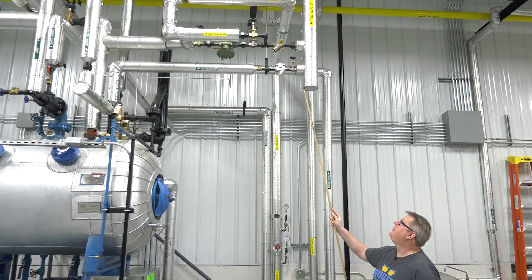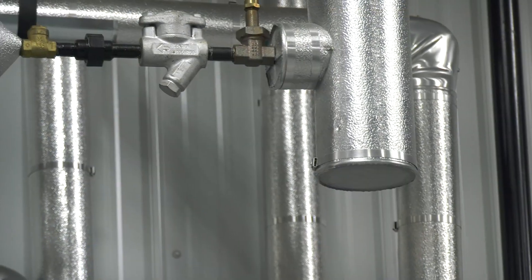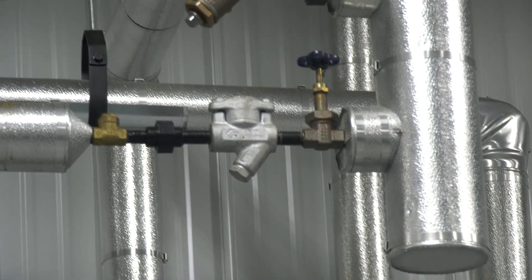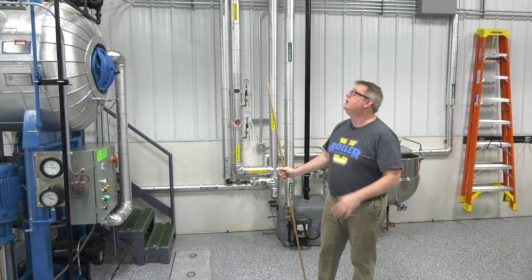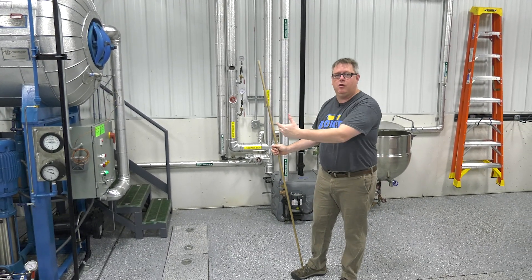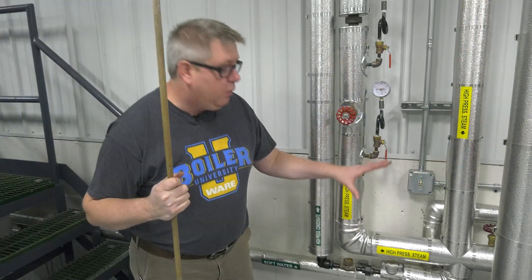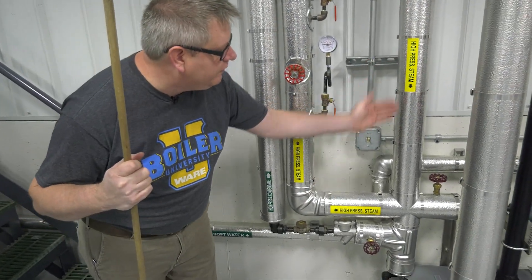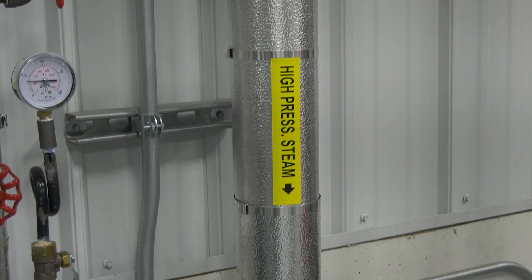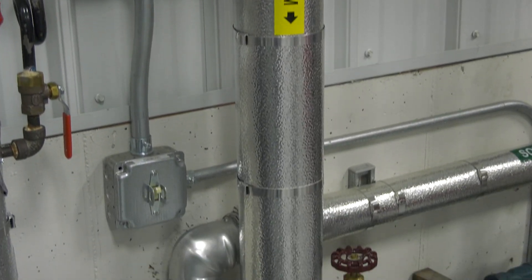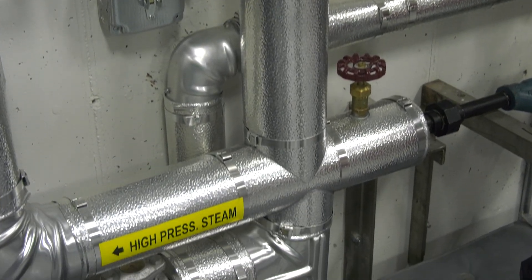We also want to have a trap, a drip leg and trap at any point where we're bringing off steam into a control valve or pressure reducing valve so that we don't get condensate going into that valve. We've got a drip leg here because we've got a drop for our process, another control valve, and we want to keep those lines clear of condensate.